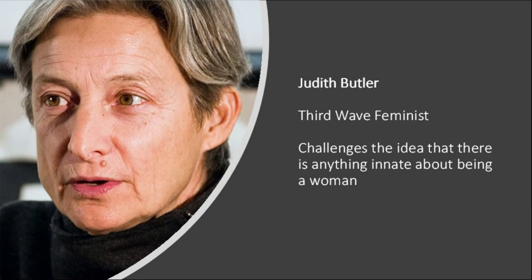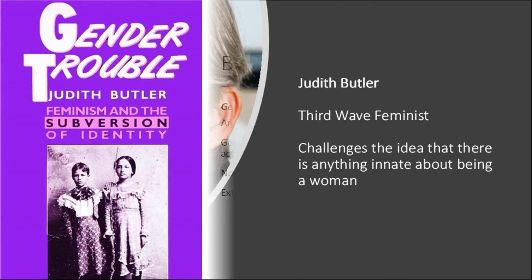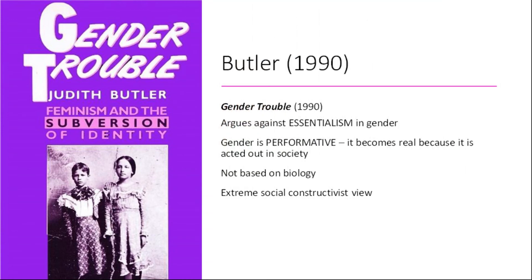Judith Butler is a third-wave feminist who challenges the idea that there is anything innate about being a woman. In her celebrated book Gender Trouble from 1990, Butler argues against essentialism in gender. She says that gender is performative — a sort of act that people put on — but it becomes real because it is acted out in society. She doesn't believe gender has any basis in biology. This is an extreme social constructivist view, though it has become a lot more mainstream since then.